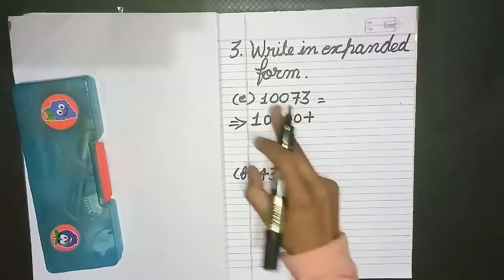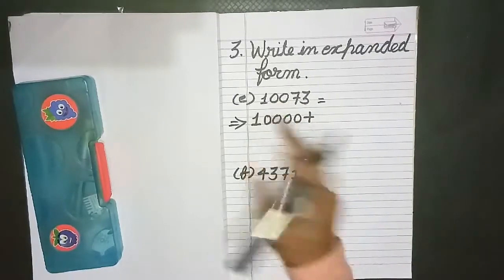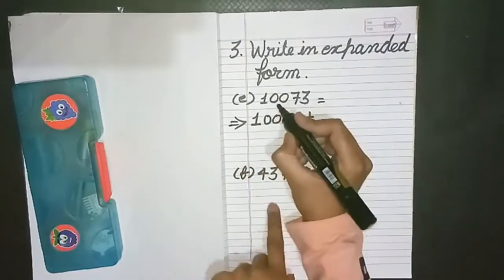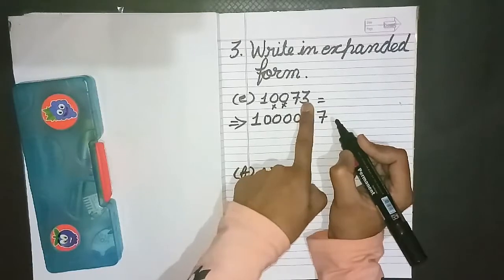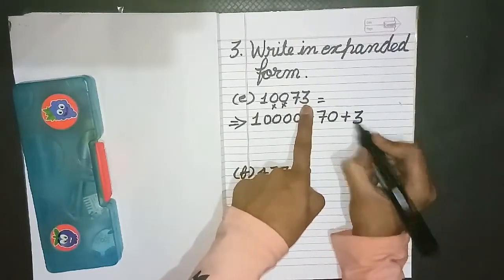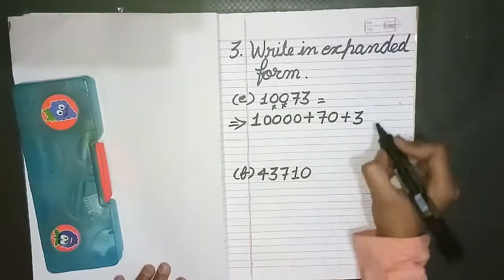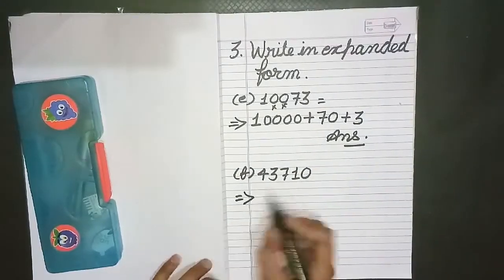We have to convert these all digits to zeros, so it has 4 zeros. Next digit is 0, so we will neglect 0. So let's write 7. Now it has one digit at its right hand side, so we will add 1 zero. Next is 3. So this is the expanded form: 10073 = 10000 + 70 + 3.